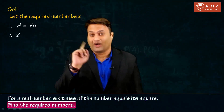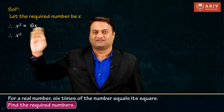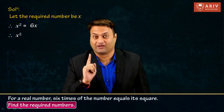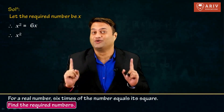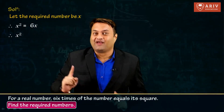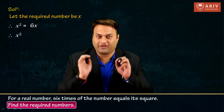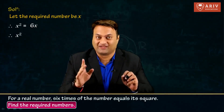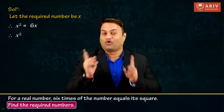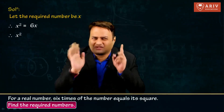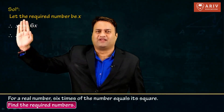One important thing: don't directly cancel this x and x. You can't do that. Because x can also be equal to zero, and if you cancel x and x, that is basically dividing by x. If x is zero, then you cannot divide by zero. So always remember this — don't cancel x and x directly.